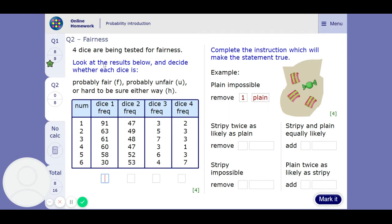So, 4 dice are being tested for fairness. Look at the results below and decide whether each dice is fair, probably unfair, or hard to tell. So, the first one. They should get the same sort of numbers each time if it's fair. This 90 down to this 30, that's too much variance for me. That's too much difference. So I'm going to say unlikely. These are all pretty much the same. They change a little but not by much, so I'm going to say that it's probably fair.